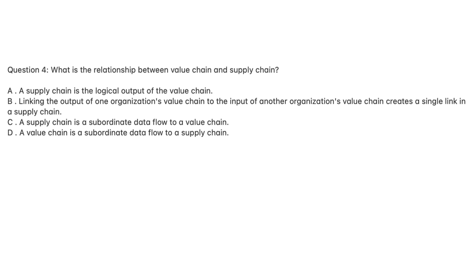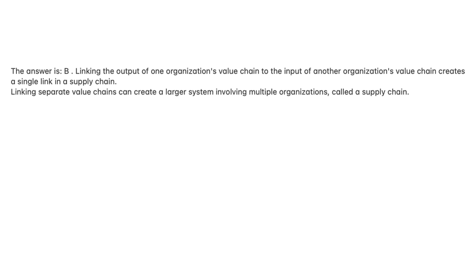Question 4. What is the relationship between value chain and supply chain? A. A supply chain is the logical output of the value chain. B. Linking the output of one organization's value chain to the input of another organization's value chain creates a single link in a supply chain. C. A supply chain is a subordinate data flow to a supply chain. D. A value chain is a subordinate data flow to a supply chain. The answer is B. Linking separate value chains can create a larger system involving multiple organizations, called a supply chain.